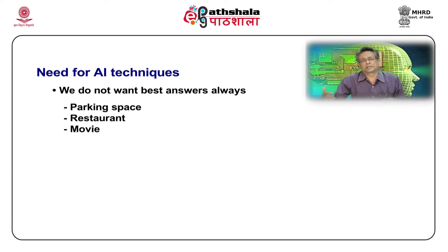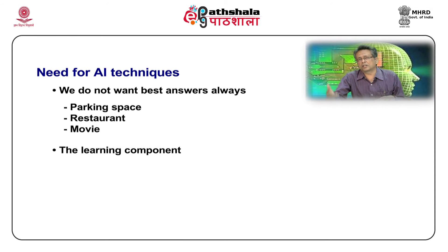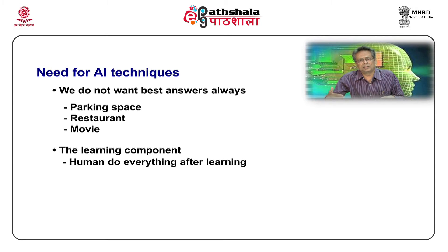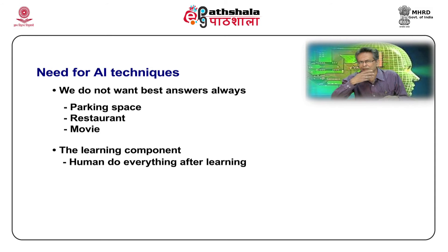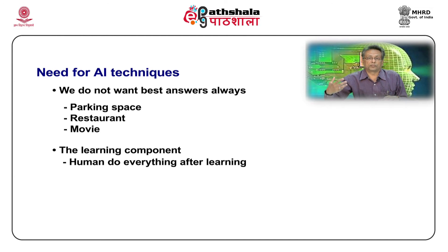That is another characteristic of an AI technique — being able to find satisficing solutions. And one more thing: conventional programs don't have a learning component. Humans learn by doing things, practicing, and becoming better. Can we have computer programs which can learn on its own? If we have a program which can learn on its own, we don't need programmers. But the learning component is something which is very, very hard to build in.